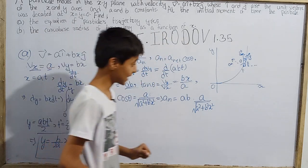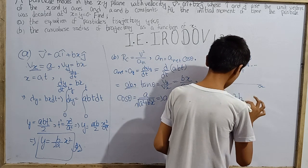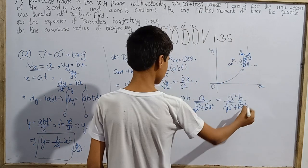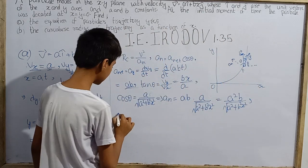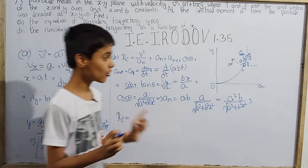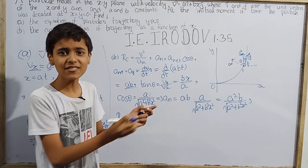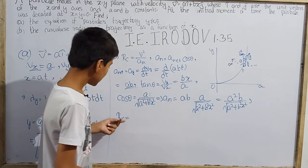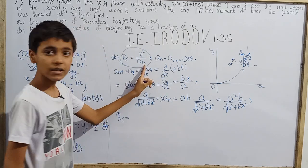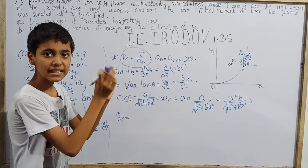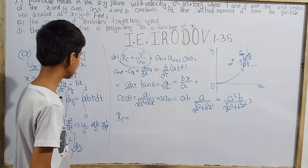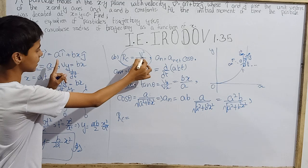Now I have to find the radius of curvature. The problem becomes straightforward now — we just need to put v² over aₙ. We know v² equals vx² plus vy² equals a² plus b²x². This is entirely mathematics at this point; no more new concepts to apply.